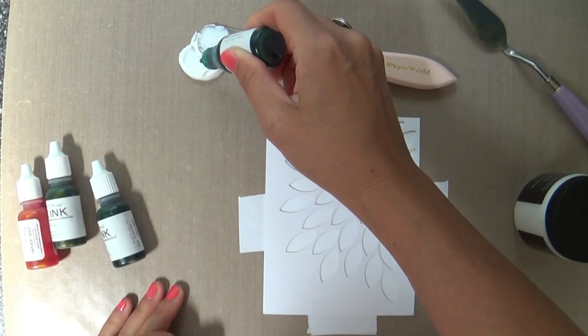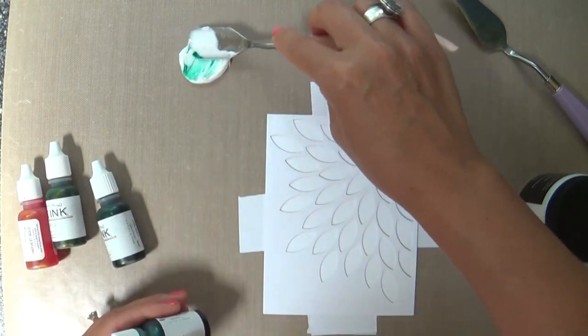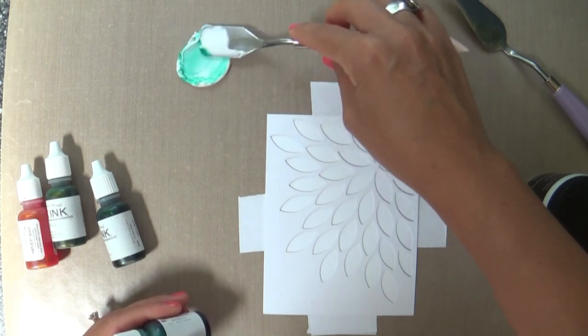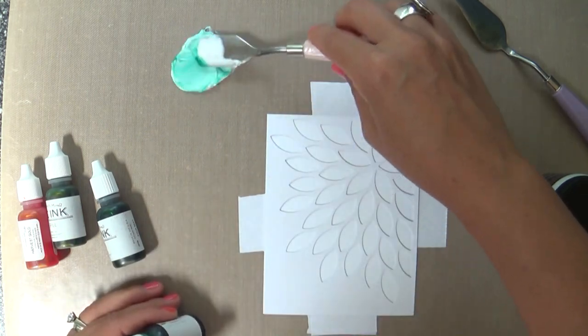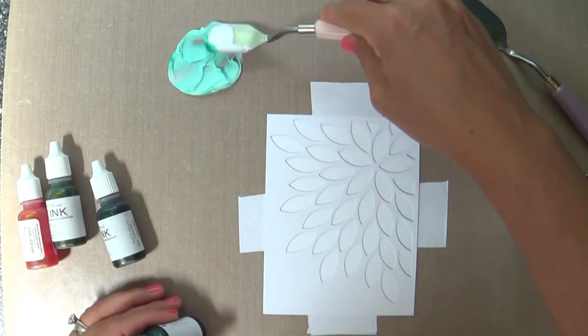Okay so now I'm adding one drop of Hawaiian Shores reinker and you can always add some more if it's not dark enough. I think I ended up adding one more drop but you can make it as dark or as light as you prefer.